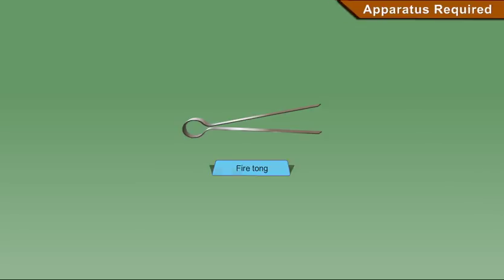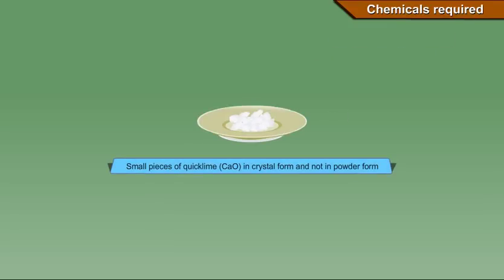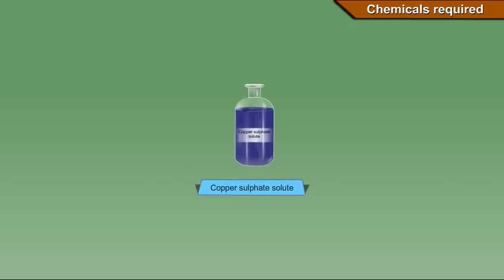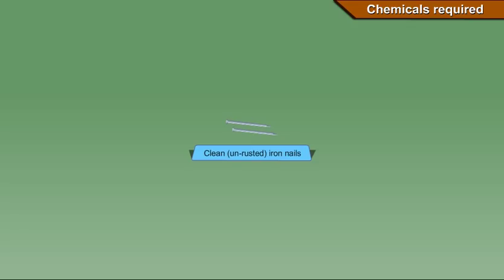Chemicals required: Small pieces of quicklime (CaO) in crystal form and not in powder form, ferrous sulfate crystals, copper sulfate solution, and clean unrusted iron nails.